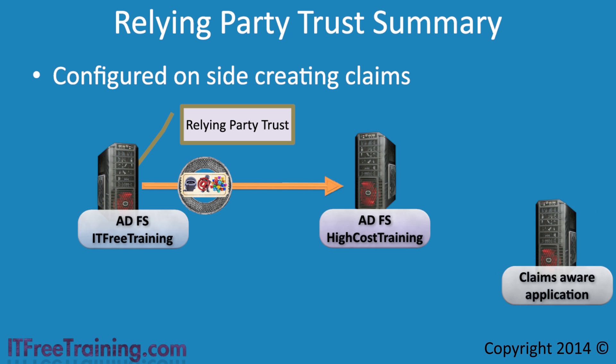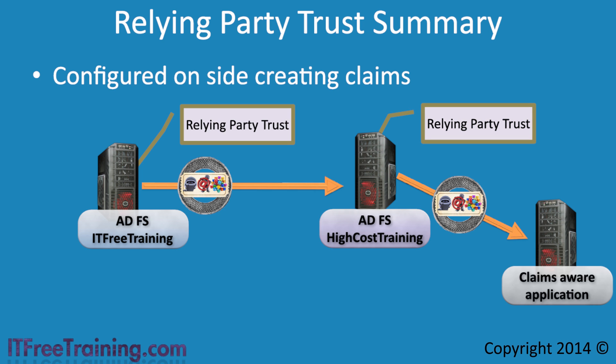Now also consider that on the HighCostTraining side is a claims-aware application. The server uses claims as well, however it does not use the claims created by ITFreeTraining — it only accepts claims from HighCostTraining. Typically, when the user presents the claim to the HighCostTraining Federation Server, the server will create a new claim and give that to the user. The user can then use this claim to access the claims-aware application. This is the same sort of principle as when you go to a store and purchase an item, but rather than giving you the item, they give you a token which you then use to get the product. The important point is that since the server is creating a claim, a Relying Party Trust is required and defines how the claim will be created. Once the claim is created, the claims-aware application can use it.